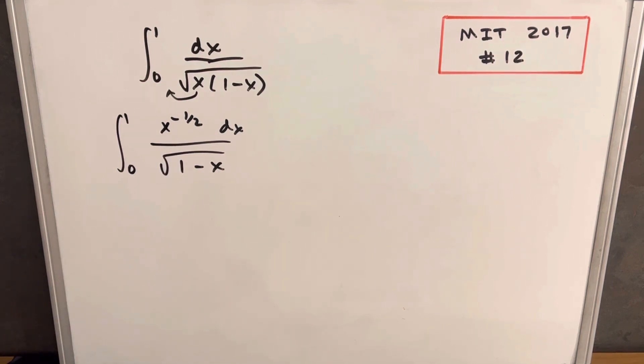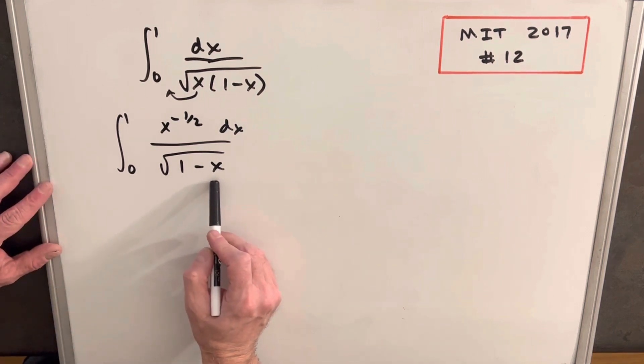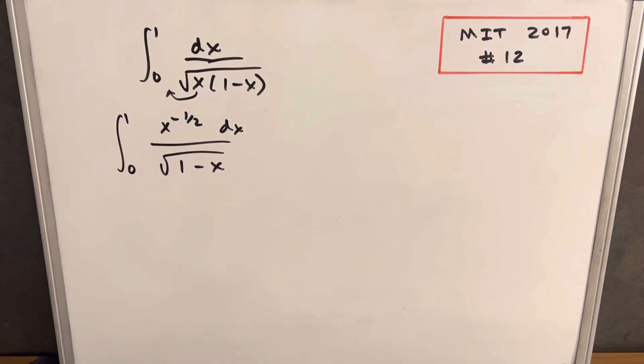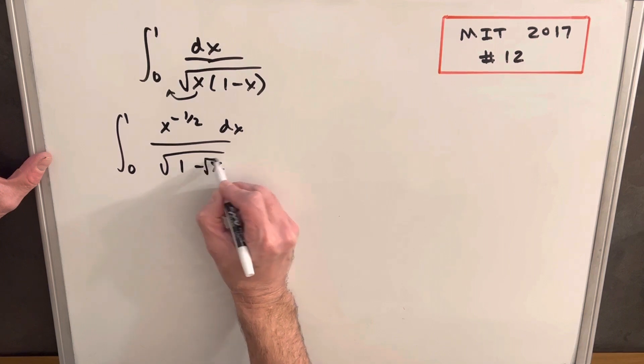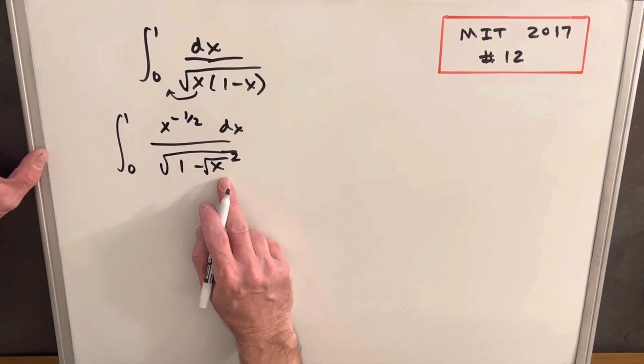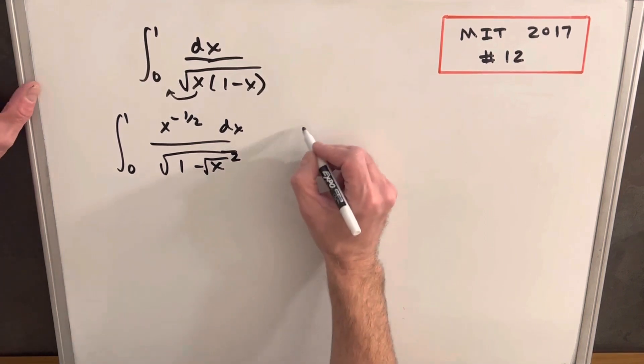From here, I want to do a u-substitution. The problem is if I make 1 minus x my u, then the derivative is just 1. I'd like to do a u-substitution where I can capture this numerator. What's going to work is if I take this x and write it as the square root of x squared. I haven't changed it, but now this is going to be better for my u-substitution.